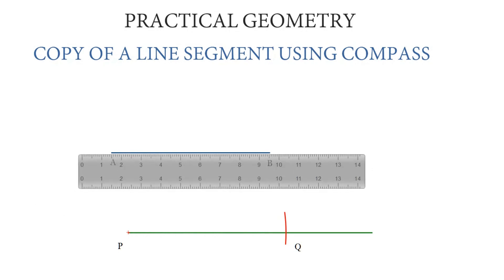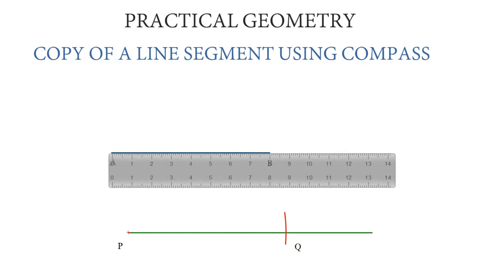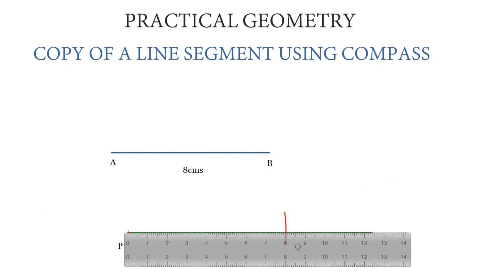Now let us check the length. If we measure the AB line segment, it is 8 cm. Now let us check PQ. PQ is also 8 cm. We can see this on the ruler. Both line segments are of the same length.